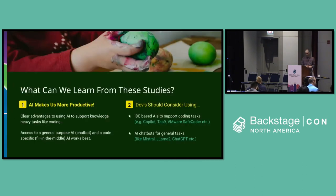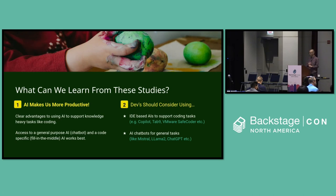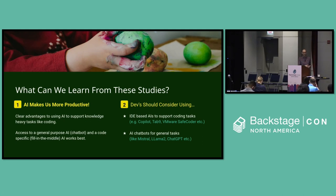What can we learn from these studies? Number one, AI makes us more productive. It doesn't matter if you're a knowledge worker or a developer — the result is the same. There are clear advantages to using AI in knowledge-heavy tasks like coding. Two, developers should consider using generative AI — perhaps following the McKinsey example of using two tools: something that helps with code in your IDE, and something for all the times when you're not inside your IDE, like a ChatGPT-style chatbot.